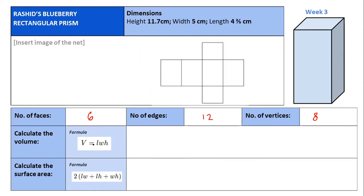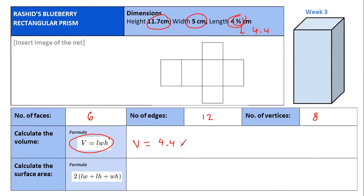Here we have the volume. The formula of volume is length times width times height. The length is four and two-fifths, which is 4.4 — because two-fifths is four-tenths, which is 0.4. So it's 4.4. Now substitute: volume equals 4.4 times 5 times 11.7. The result will be in cubic centimeters because we are dealing with volume.